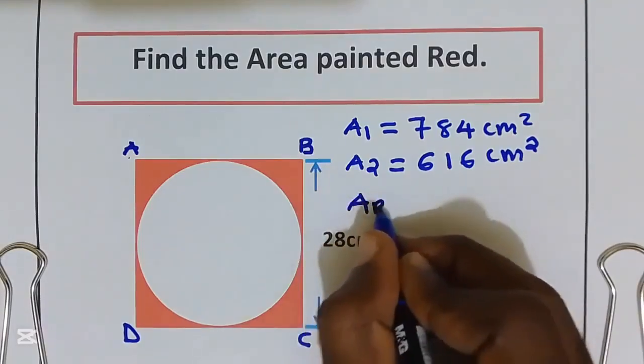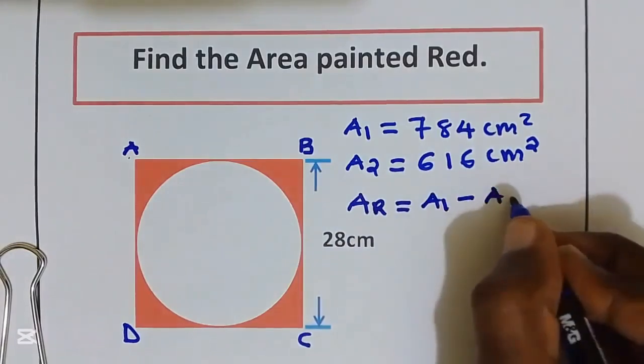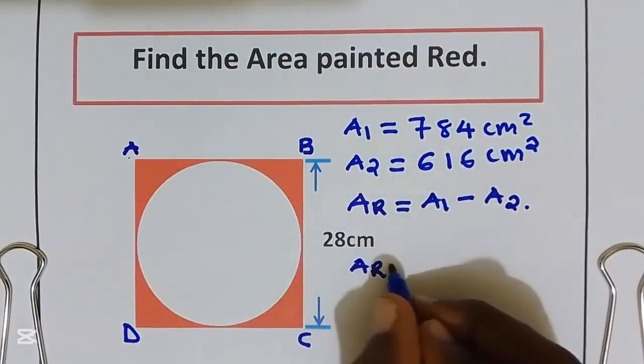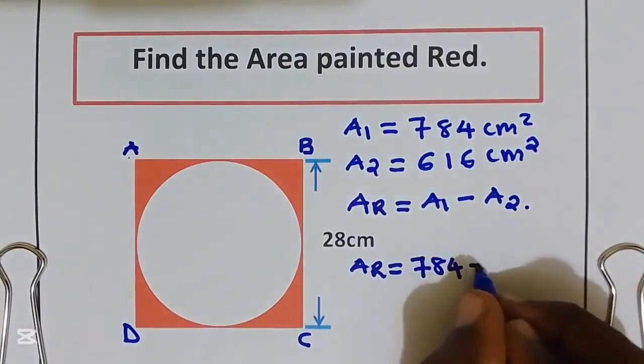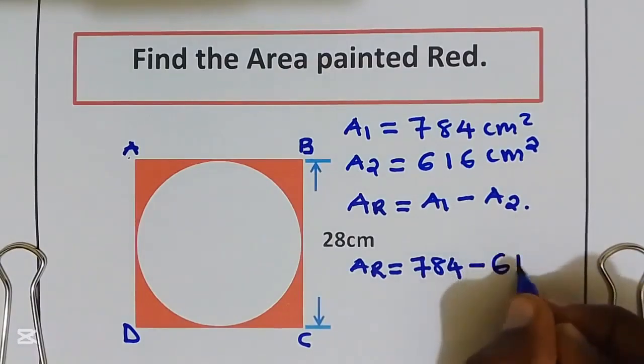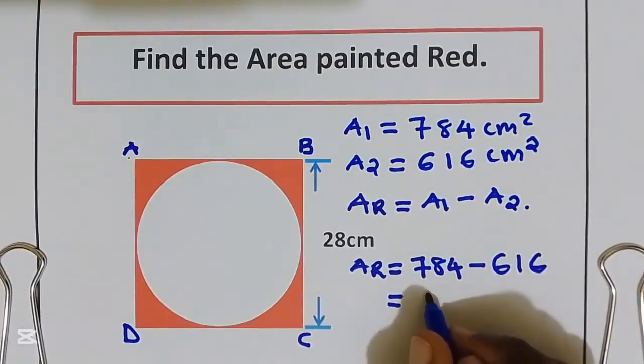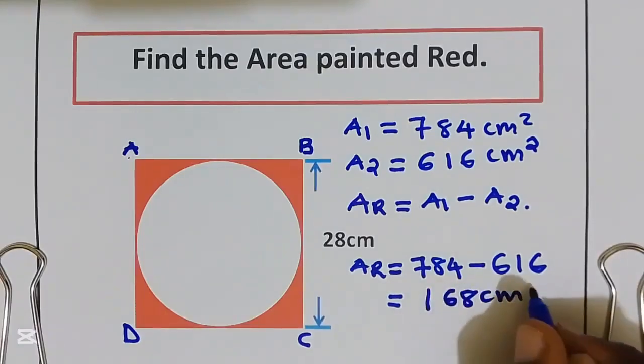Area painted red is equal to area 1 take away area 2. That is, area painted red is equal to 784 take away 616. We are going to get 168 cm square.